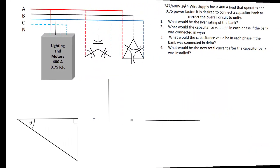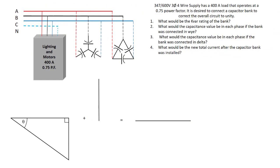We're going to look at a basic power factor correction example. We've got a 347/600V three-phase four-wire supply. It has a 400 amp load that operates at a 0.75 power factor and the question is, it's desired to connect a capacitor bank to correct the overall circuit power factor to unity. Unity basically means that we have no VARs at all coming from the circuit, just true power or in-phase current.